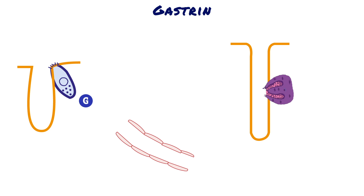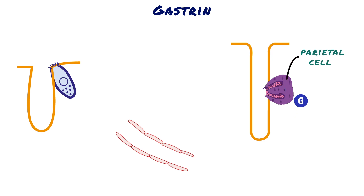Gastrin is a peptide hormone that stimulates secretion of gastric acid by the parietal cells of the stomach. Parietal cells are the epithelial cells that secrete hydrochloric acid and intrinsic factor. Gastrin is secreted by G-cells in the antrum of the stomach. G-cells are flask-shaped with a broad base containing many gastrin granules and a narrow apex that reaches the mucosal surface.